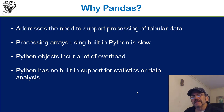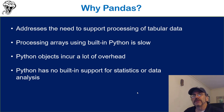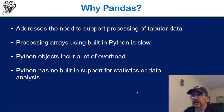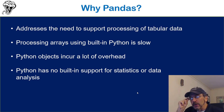Pandas addresses that and does it fast. NumPy is written in C, and Pandas is built on top of NumPy. As a result, it's very fast. Without this, processing arrays in Python would be extremely slow. A lot of that gets back to dynamic typing, because Python objects incur a lot of overhead — it has to store a lot of information about what's in your objects.